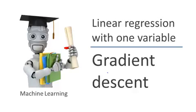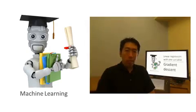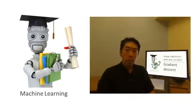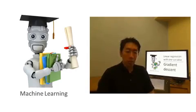We previously defined the cost function J. In this video, I want to tell you about an algorithm called gradient descent for minimizing the cost function J. It turns out gradient descent is a more general algorithm used not only in linear regression, but actually used all over the place in machine learning. Later in the class, we'll use gradient descent to minimize other functions as well, not just the cost function J for linear regression. So I'm going to talk about gradient descent for minimizing some arbitrary function J, and then in later videos we'll apply it specifically to the cost function for linear regression.